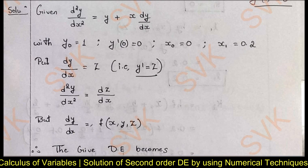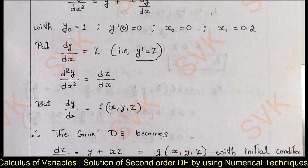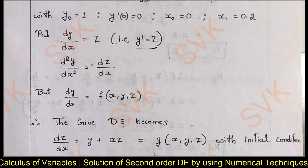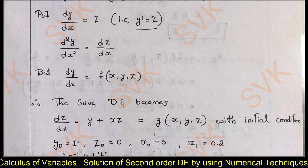We have dy/dx written as f(x, y, z). The given differential equation becomes dz/dx = y + xz, since z = dy/dx. So dz/dx is a function g(x, y, z). With the initial conditions: y₀ = 1, z₀ = 0, x₀ = 0, and x₁ = 0.2.